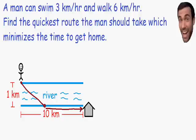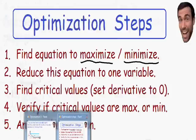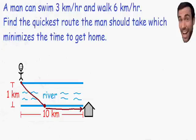Let's take a look at all of the steps we use in optimization. Step number one says to find the equation to maximize or minimize. Going back to our example, it says find the quickest route that the man should take, which minimizes the time. So we need to minimize the time it takes for the man to get home.